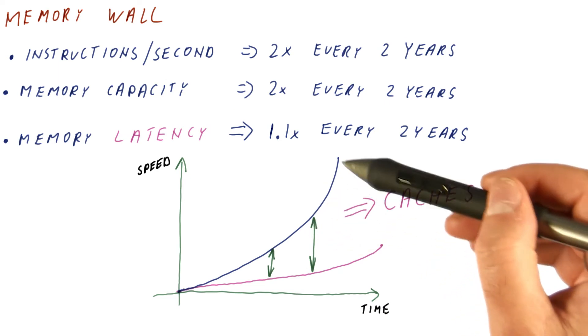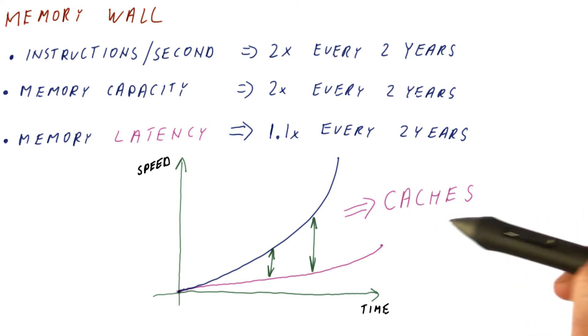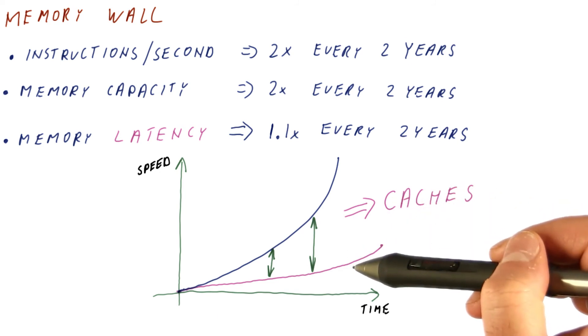So our processors now are accessing caches, which are fast, and only those rare accesses that miss in the cache will end up going to the slow main memory.